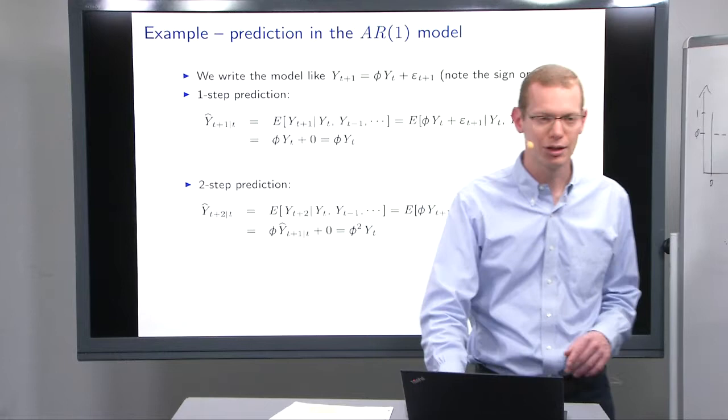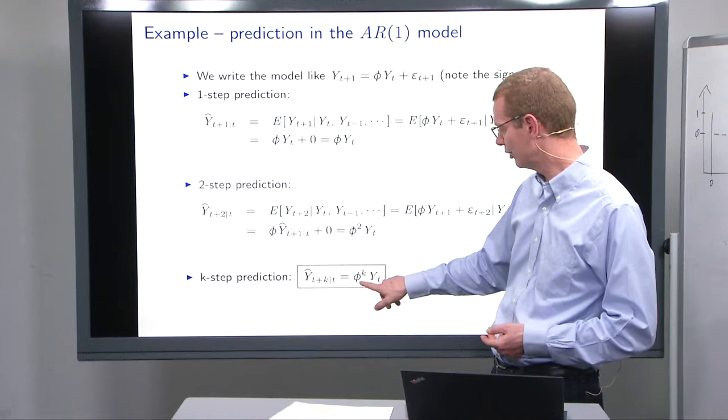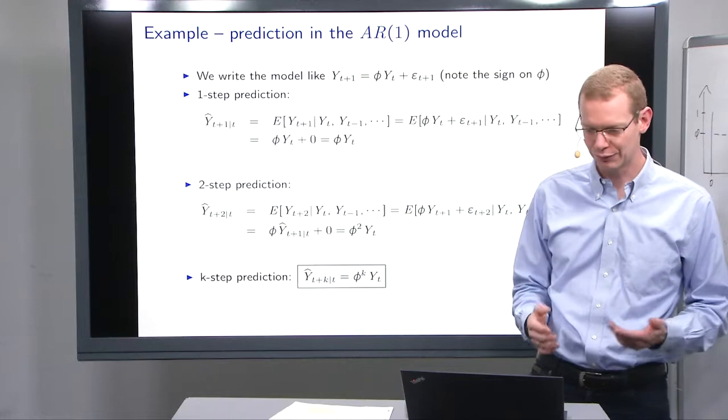If we just continue doing this, what we get is that the k-step prediction is phi to the k power times y_t. And then we just have to keep on going from there.